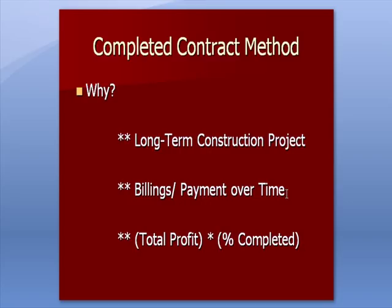A key calculation we'll see throughout the example: we take the total profit multiplied by the percentage of the project that we've completed, and that gives us the profit we recognize as income — as revenue — in a particular year. That's the formula.